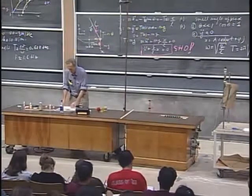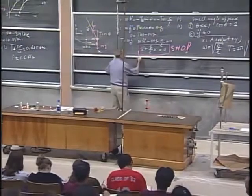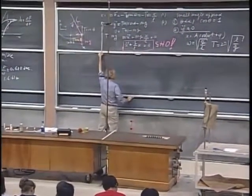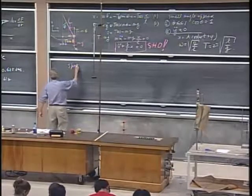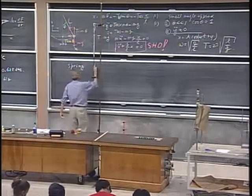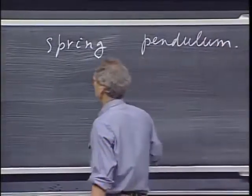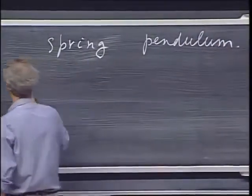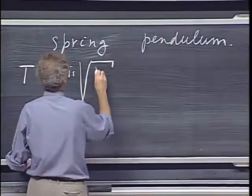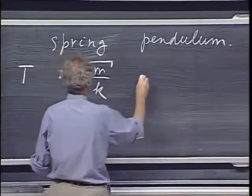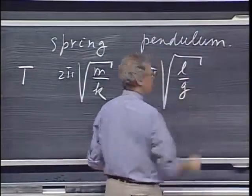I want to compare the results that we have for the spring with the results from the pendulum to give you some further insight. We have the spring and we have the pendulum, and I'm only going to look at the period T, which here is 2π divided by the square root of m over k, and here is 2π times the square root of l over g.